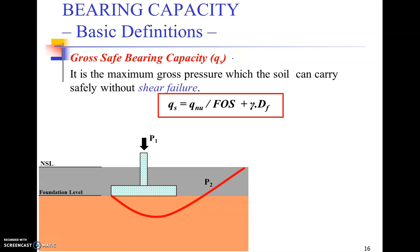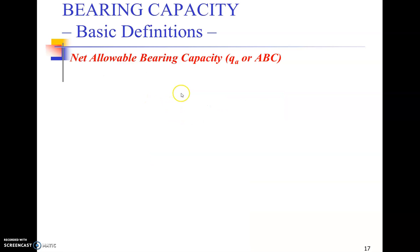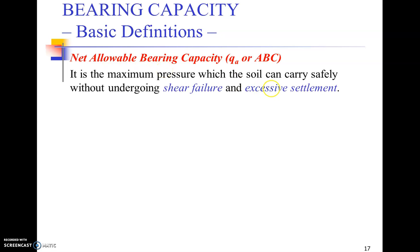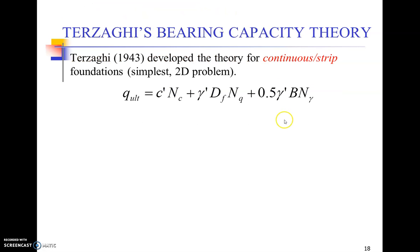That involves this bearing capacity which is safe against shear failure, gross safe bearing capacity. The net allowable bearing capacity also ensures our settlement criteria, that our foundation is safe against the settlement failure. So we use this for the foundation design and we have got plenty of theories to compute this safe bearing capacity.